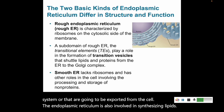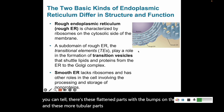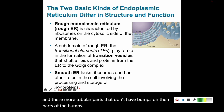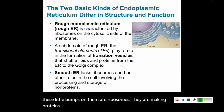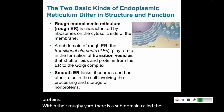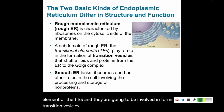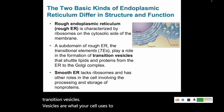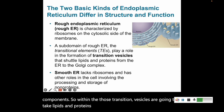There are two kinds of endoplasmic reticulum. The parts with bumps are called the rough ER, and those bumps are ribosomes making proteins. Within the rough ER, there's a subdomain called the transitional element, or TEs, which are involved in forming transition vesicles. Those transition vesicles are what the cell uses to move lipids and proteins from the rough ER to the Golgi.